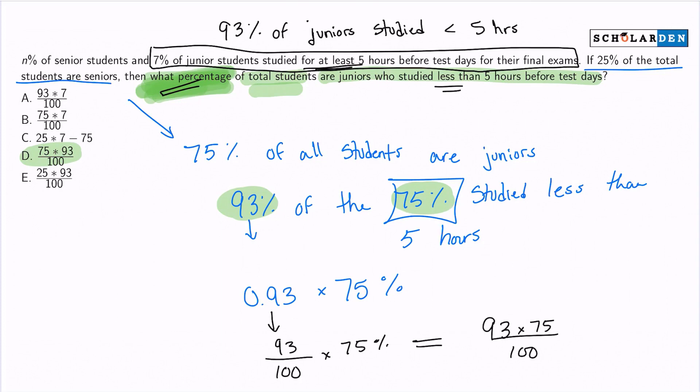And it doesn't matter which way you write it. You can write it as 75 times 93 over 100. It's still the same exact thing. We still have D as the final answer. So I hope that made sense. Again, it's all about interpreting the English into math and then moving forward from there. Thank you.